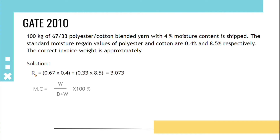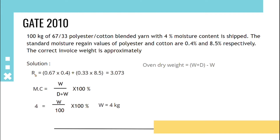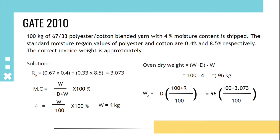We know moisture content equals amount of water upon total weight of material multiplied by 100. With moisture content at 4% and total weight 100 kg, the amount of water is 4 kg. Oven dry weight is 100 minus 4, which equals 96 kg. The correct invoice weight formula is: oven dry weight × (100 + regain) / 100, giving 96 × (100 + 3.073) / 100, which equals approximately 98.9 kg.